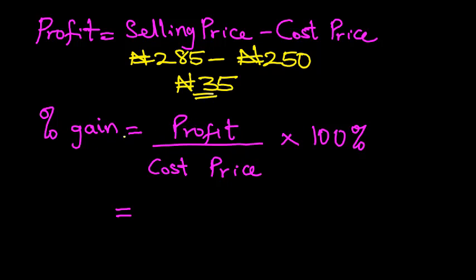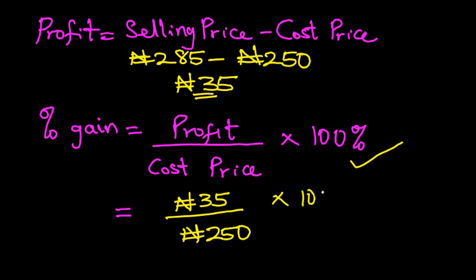The percentage gain we'll be getting using this formula: profit divided by cost price times 100%. The profit is 35 naira. The cost price is 250 naira, then times 100%. So let's see, how do we get this done? Do not forget our answer has to be in percent.